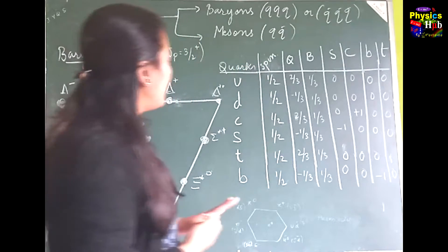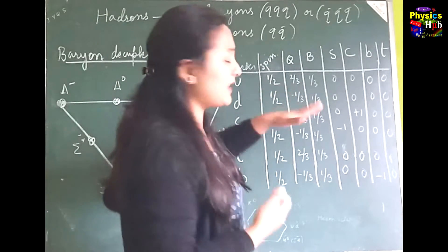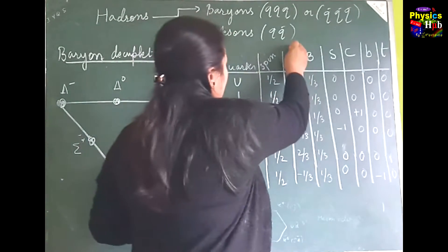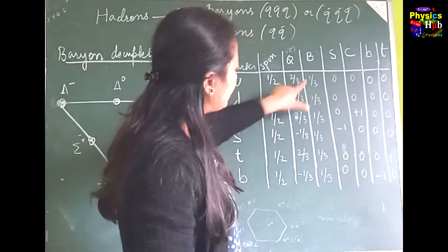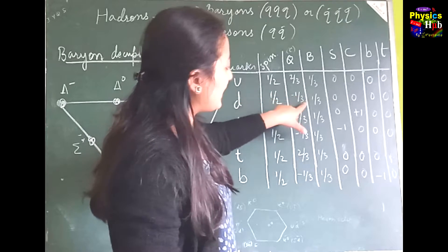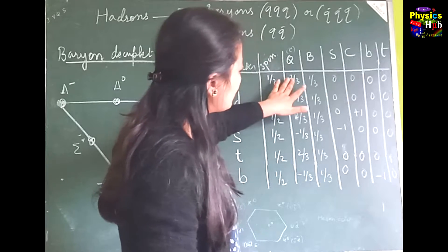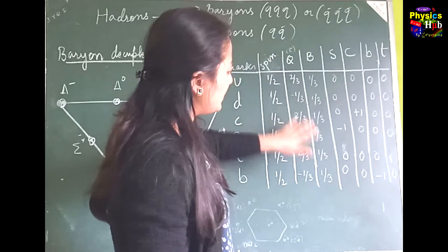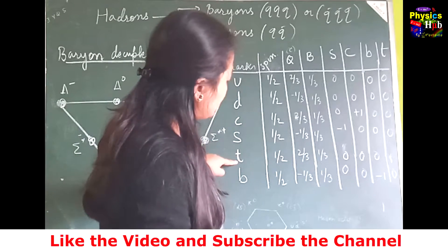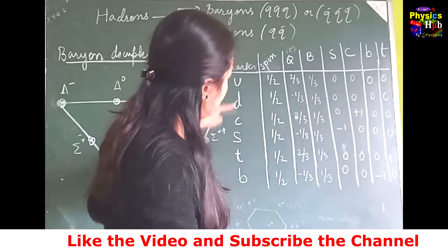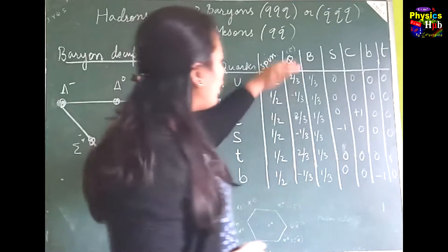Quarks carry fractional charge. U and C and T have charge +2/3 e, while D, S, and B have charge −1/3 e. The pattern alternates: +2/3 e, −1/3 e. All quarks have baryon number 1/3.